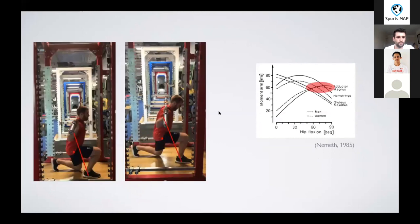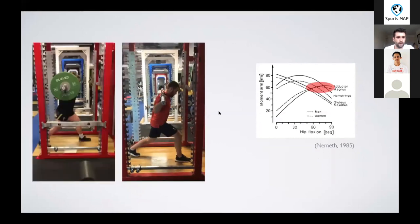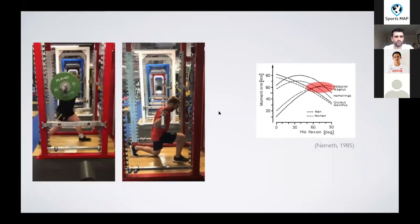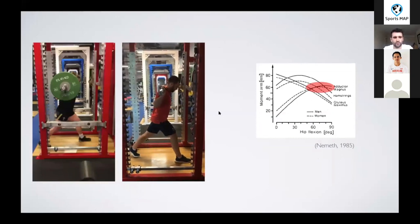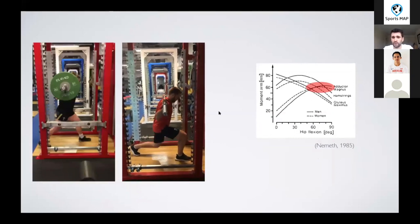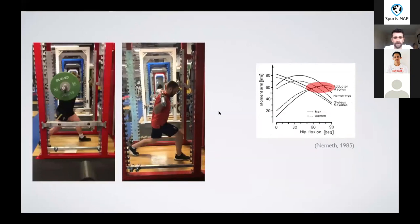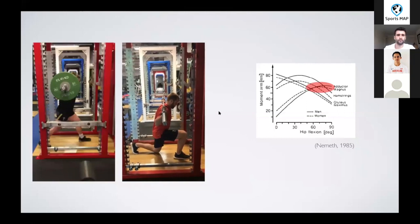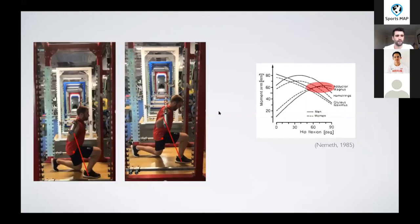We can perform pause reps, or some of you might see 1.5 reps where you do half a rep at the bottom of the exercise, just so we can increase the time under tension on the muscle in this position. And you can see here a bit of a visualization about how that moment arm actually changes.